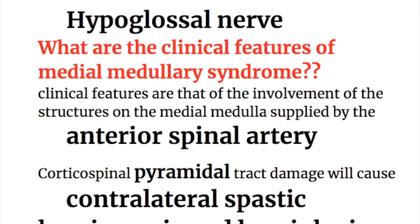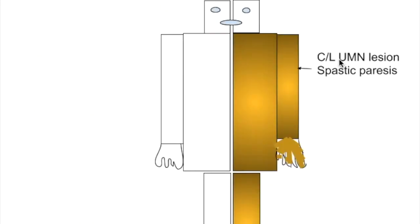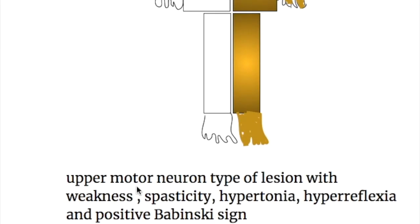The clinical features are those of involvement of the structures of the medial medulla supplied by the anterior spinal artery. Corticospinal pyramidal tract damage causes contralateral spastic hemiparesis and hemiplegia — an upper motor neuron type of lesion with weakness, spasticity, hypertonia, hyperreflexia, and a positive Babinski sign.